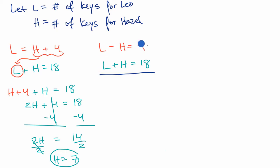Let's multiply this top equation by negative one on both sides. Negative one times L is negative L. Negative one times negative H is positive H. And this becomes negative four. Now when we add the left-hand sides, negative L plus L cancels out. H + H is 2H, and that equals negative four plus 18, which is 14.